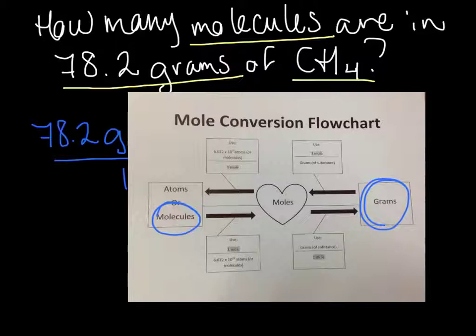You'll see that there's not an arrow that goes directly from grams to molecules. So what we're going to have to do is go from grams to moles, and then do another step to get from moles to molecules. That's why I call it a two-step problem, because you're going to have to multiply it by two different conversion factors to get all the way to the answer you want.